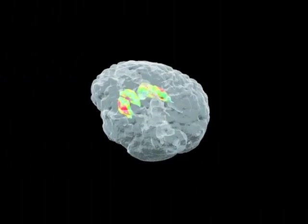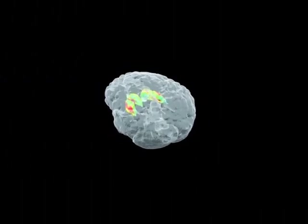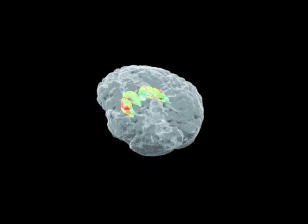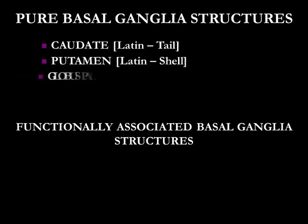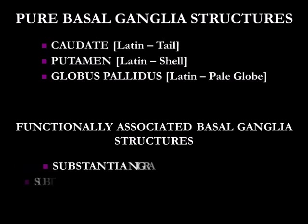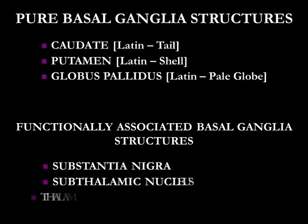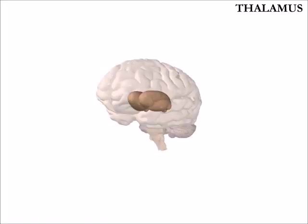The basal ganglia are a group of structures found deep within the cerebral hemispheres. The structures generally included in the basal ganglia are the caudate, putamen, and globus pallidus in the cerebrum, the substantia nigra in the midbrain, and the subthalamic nucleus in the diencephalon.